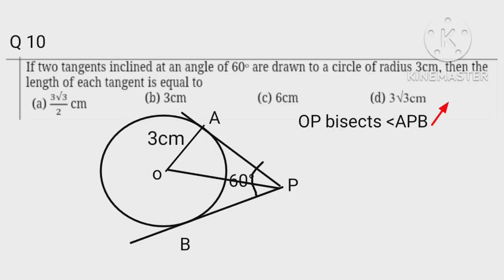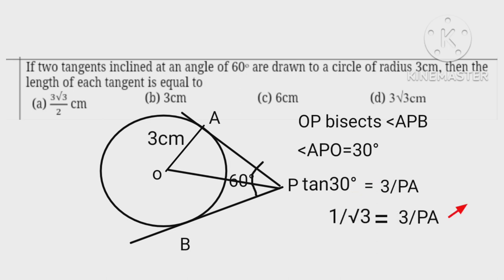Since OP bisects angle APB, therefore angle APO equals 30 degrees. Therefore tan 30 degrees equals 3 upon PA. So 1 upon square root 3 equals 3 upon PA. Hence PA equals 3 square root 3 centimeters.